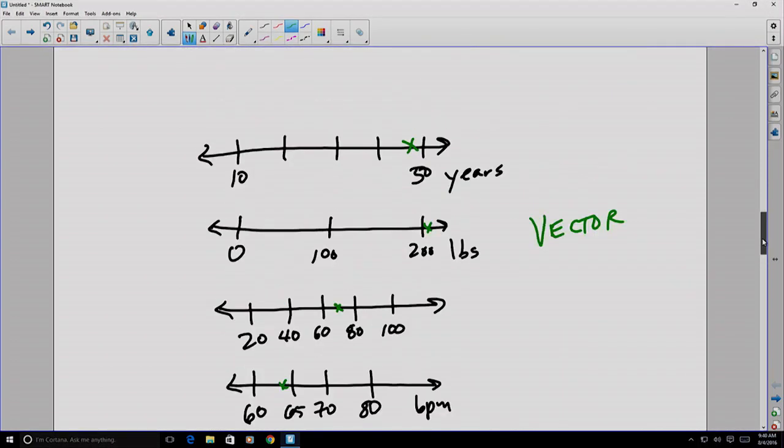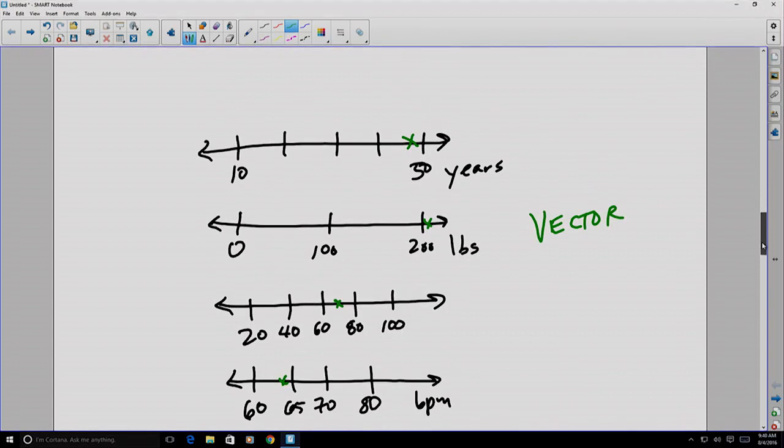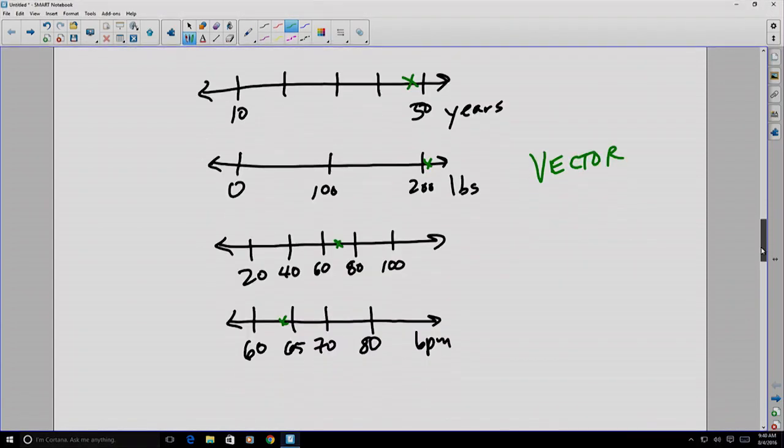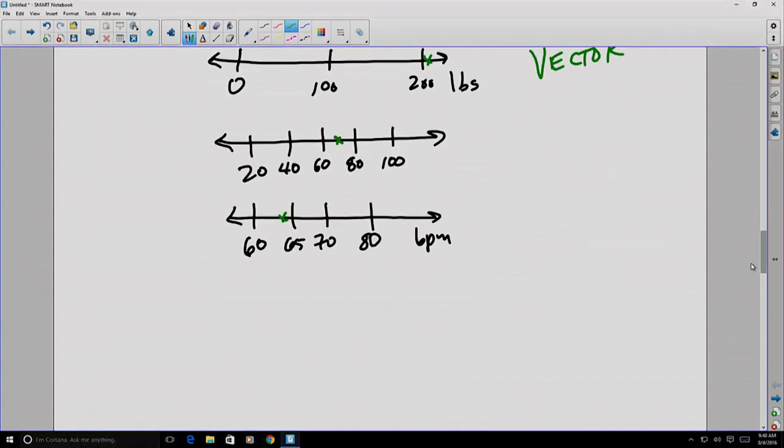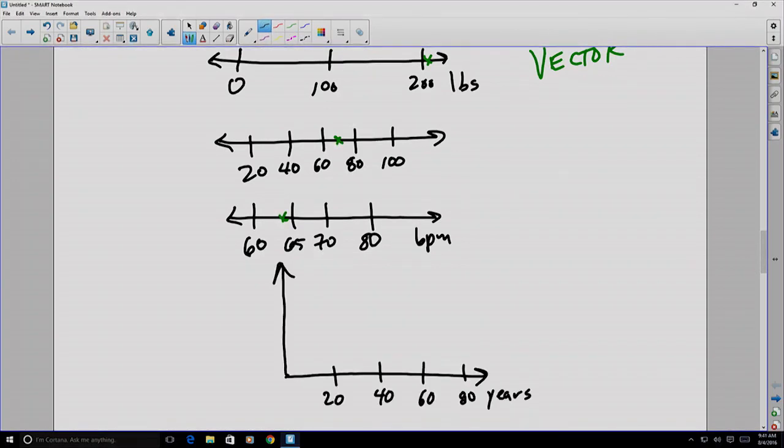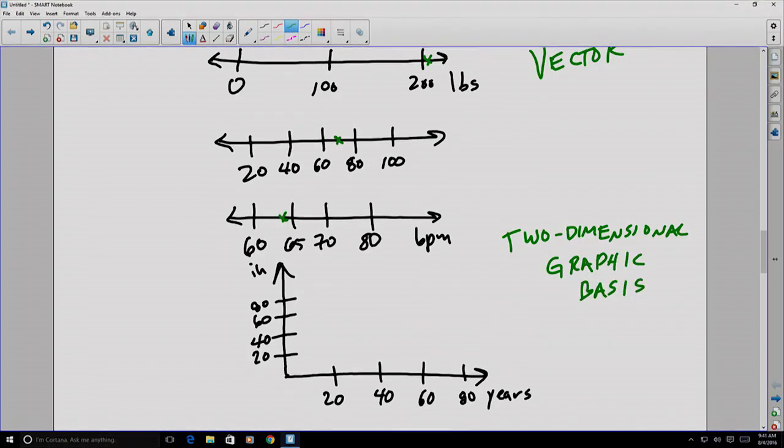If we take two of those number lines, something you've done in algebra class is to take two of those number lines and orient them perpendicularly.